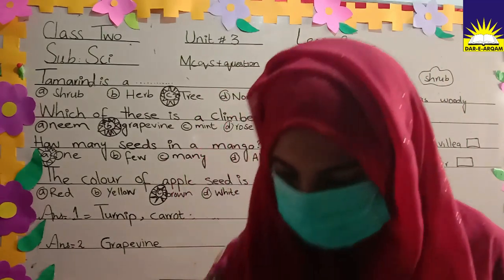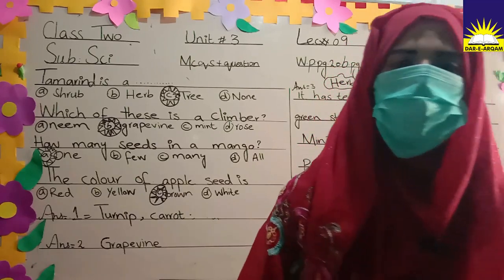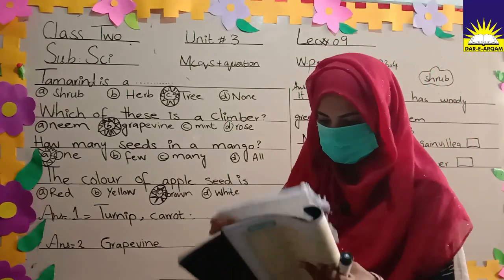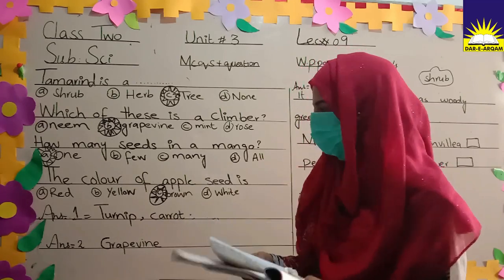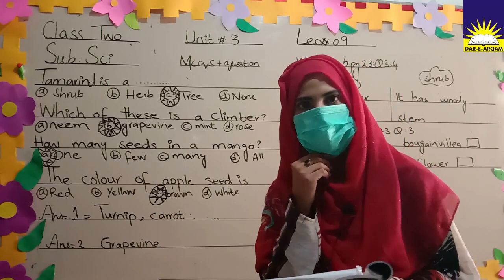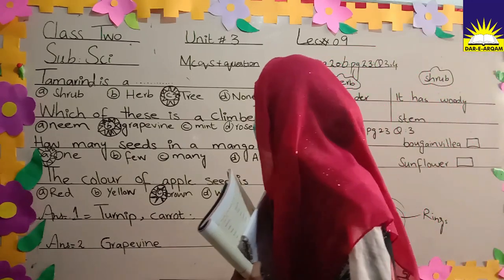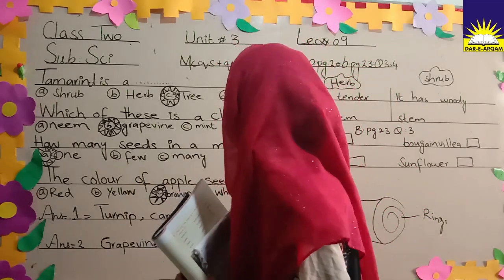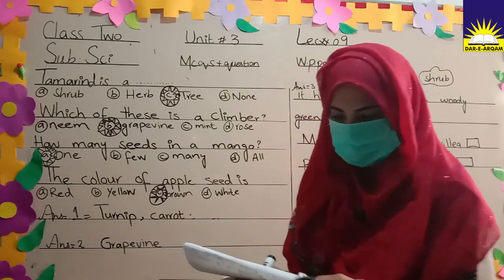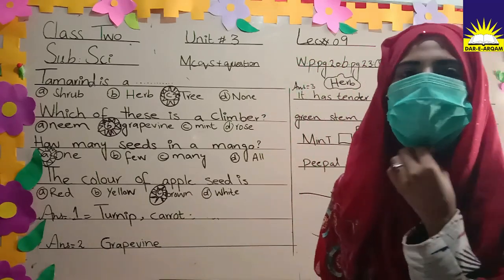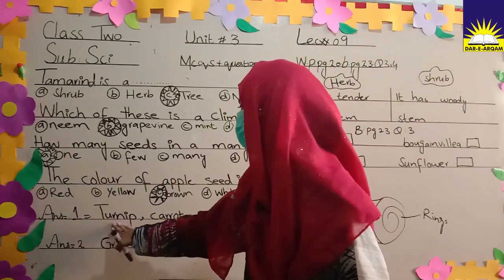Now for the written questions. Question one: write the names of vegetables which are the roots of plants. The answers are: first, turnip, which grows underground; and second, carrot, which is also a root vegetable.